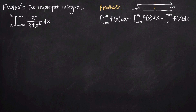What value do we pick for c? You can actually pick any value you want on the interval negative infinity to positive infinity. But by convention, we usually pick 0, because by picking 0 it's going to be easier for us to evaluate these definite integrals. So we'll say c is going to be equal to 0.